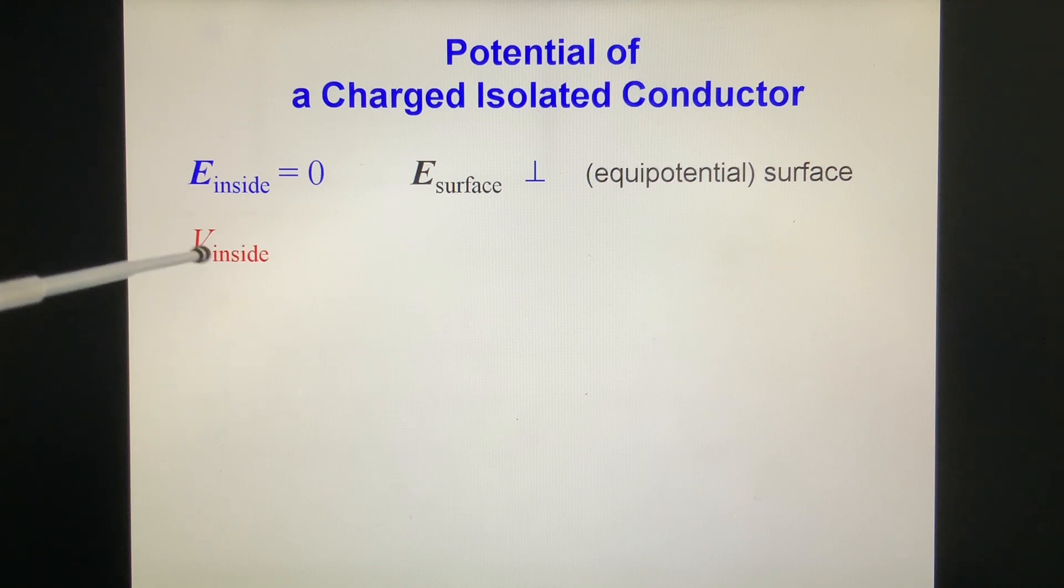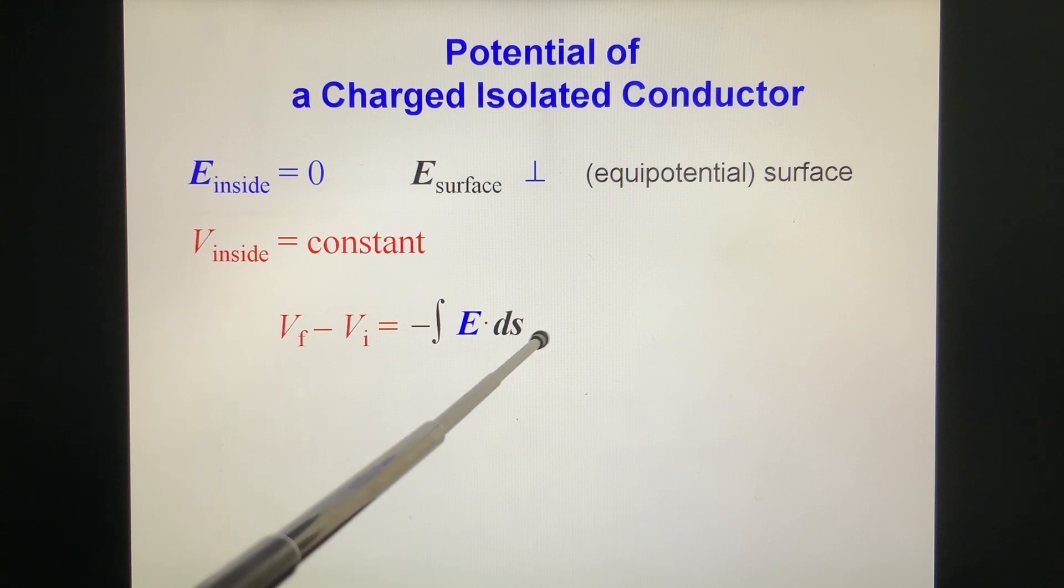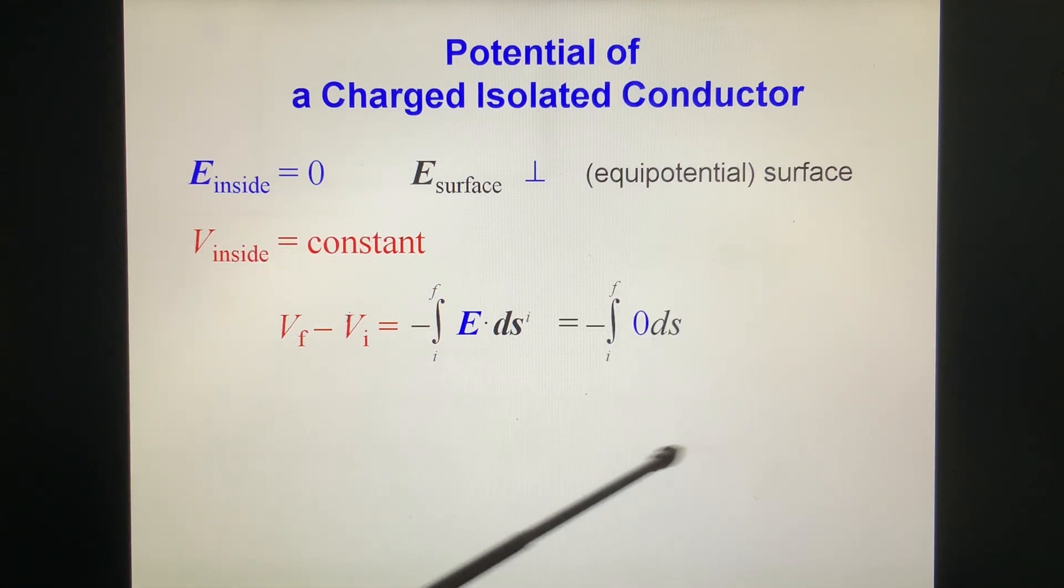V inside is a constant. Why? Let's see. V final minus V initial equals minus E dot dS. This E inside is zero. So this is zero. That means V final equals V initial anywhere, is constant.